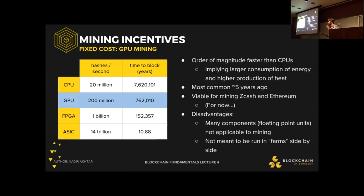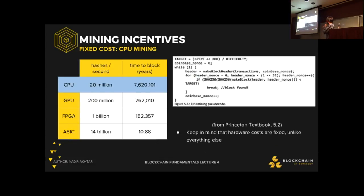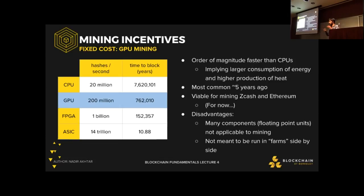A GPU is an order of magnitude faster than a CPU, so it would only take 700,000 years — a little better. GPUs consume more energy and produce more heat, and they weren't optimized for mining. They were most common about five years ago and are still viable for mining Zcash and Ethereum, which have created hash puzzles that are allegedly ASIC-resistant. A disadvantage is that GPUs have many components irrelevant to mining — for example, floating-point units that aren't needed in SHA-256's bit-shift operations — and they weren't designed to be run and farmed side by side in large operations.